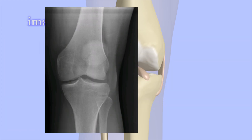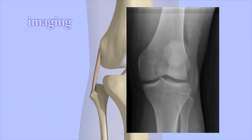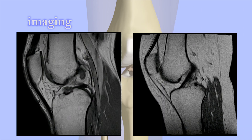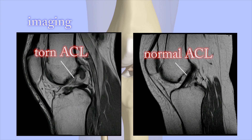X-rays are often obtained to rule out other injuries such as fractures and dislocations, but the ACL is not visible on plain film X-rays. Magnetic Resonance Imaging, or MRI, is the imaging test of choice for diagnosing ACL tears. The tear is usually clearly visible on an MRI. MRIs are also helpful for distinguishing sprains and partial tears of the ACL from complete tears.